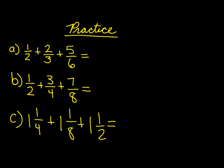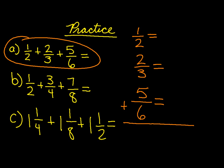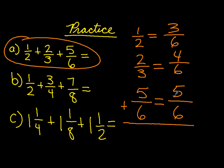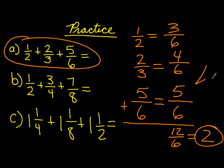Time for some practice. Pause the video, take a few moments to solve letters A, B, and C on your own, and come back and see how you did. Let's look at letter A: one-half plus two-thirds plus five-sixths. You rewrote your numbers vertically, came up with a common denominator of six. This should be three-sixths, four-sixths, and five-sixths. When you add them together, you get twelve-sixths, which is improper. The answer is two.